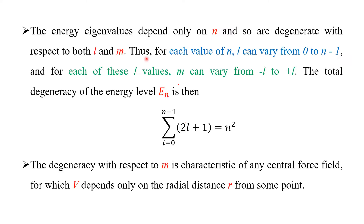For each value of n, l can vary from zero to n minus one. For example, if n equals two, l will be zero and one; if n equals three, l will be zero, one, and two. For each value of l, m can vary from minus l to plus l, including zero.